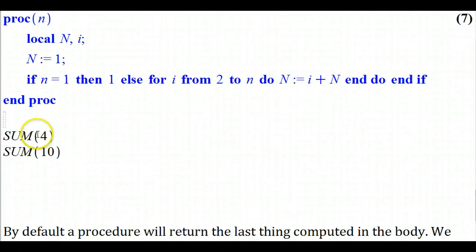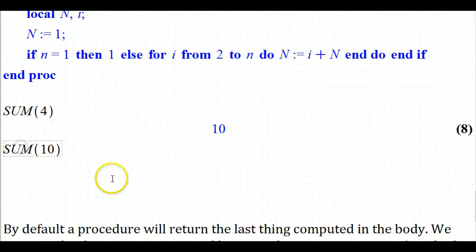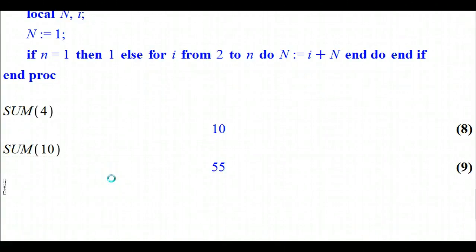Let's test it with a couple: sum of the first four integers is 10, that's correct. Sum of the first 10 integers is 55, you can check that with the formula, 10 times 11 divided by 2, that's 5 times 11, which is 55.